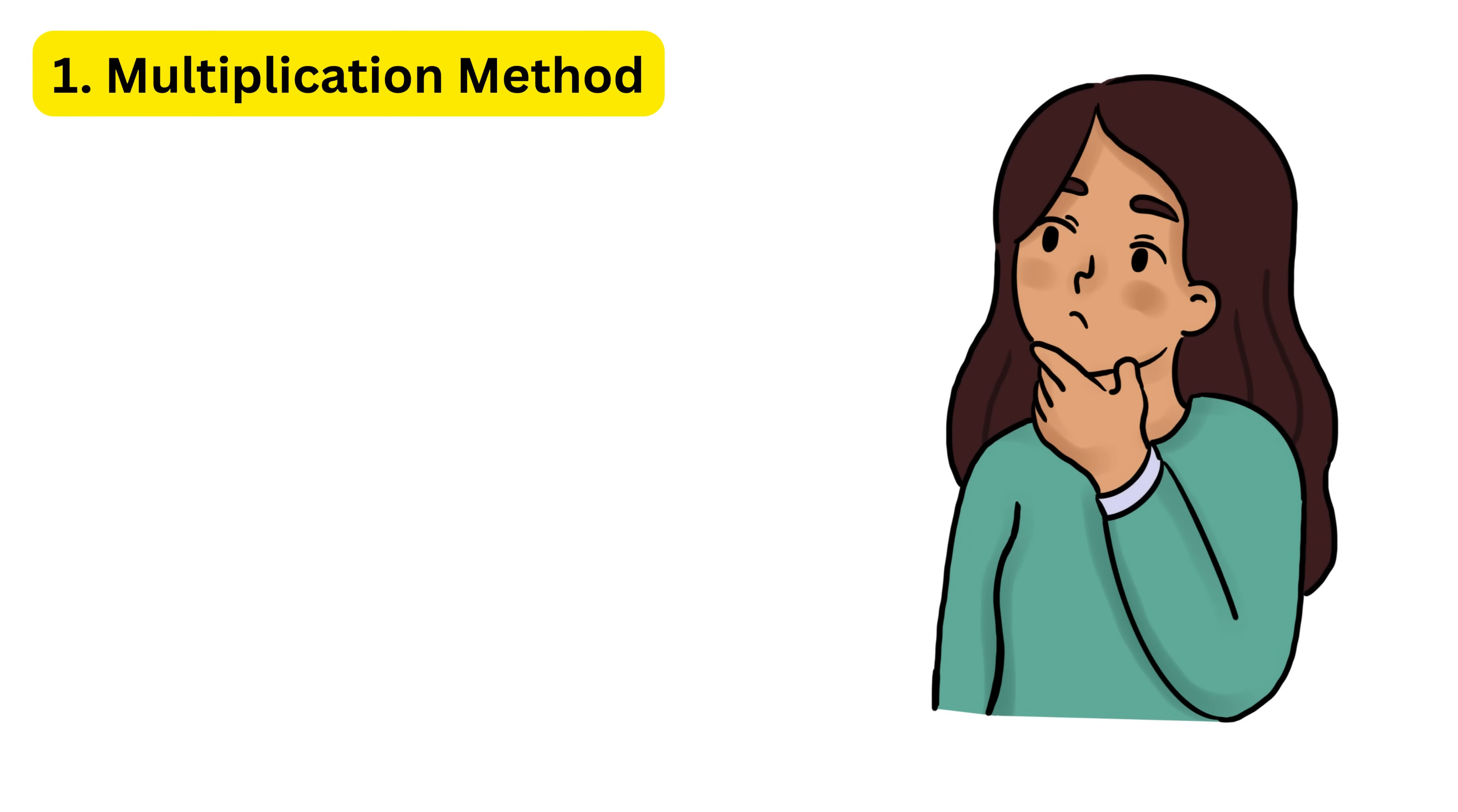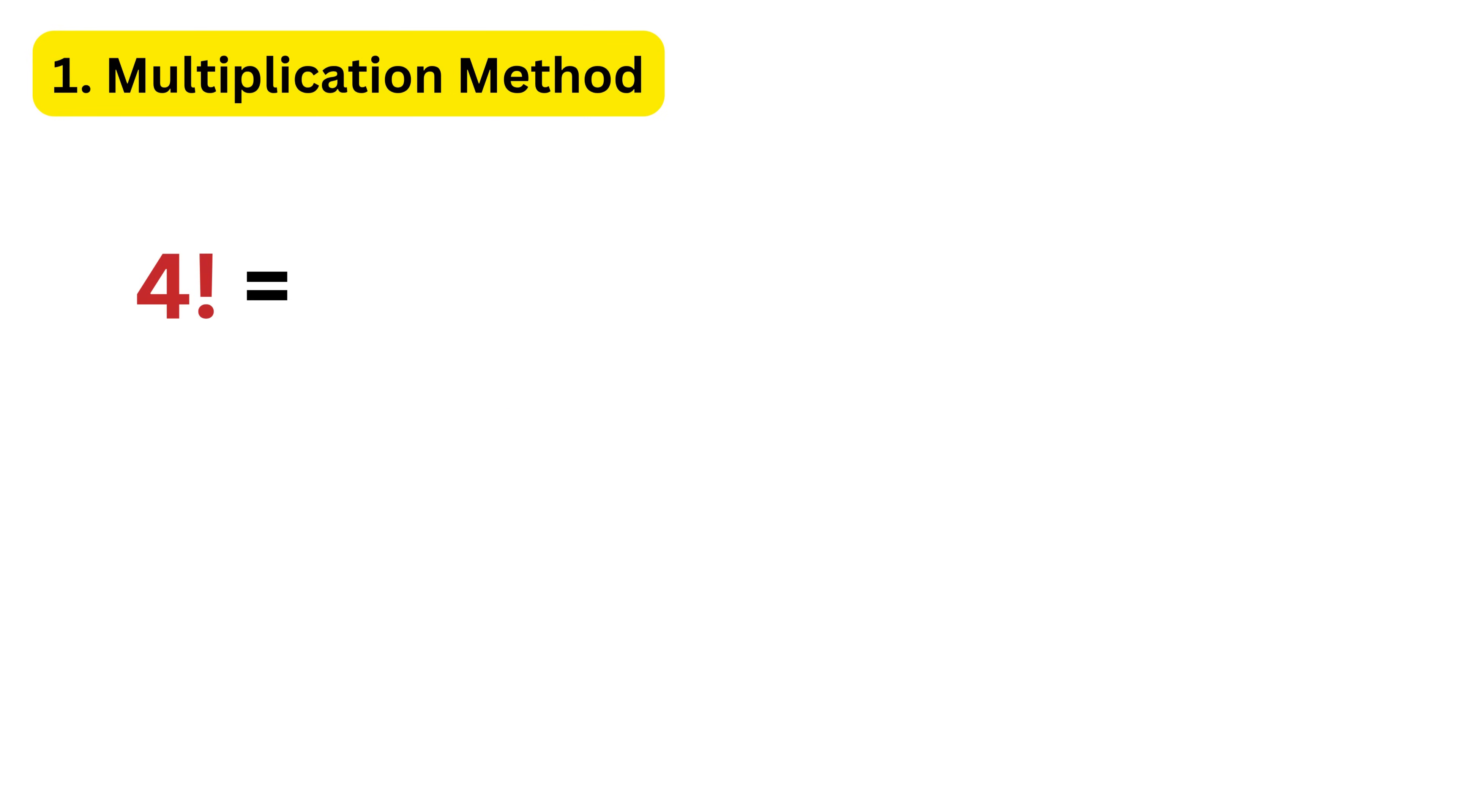How do we write any factorial? Say four factorial. We write it as four times three times two times one. Then three factorial as three times two times one, and one factorial as simply one. But we can also write this in a shorter way.